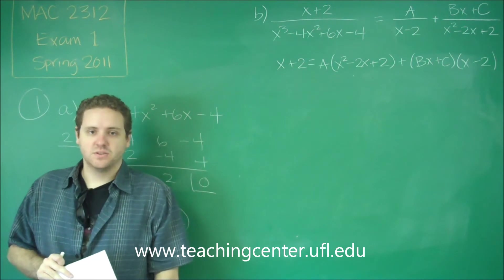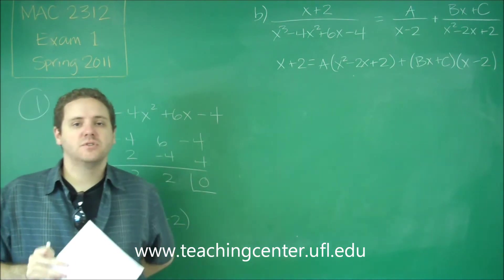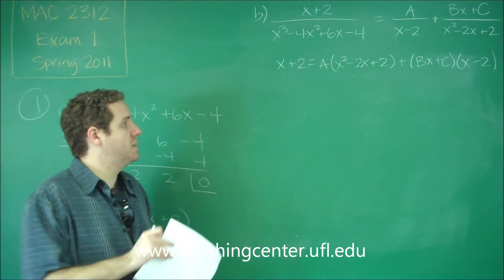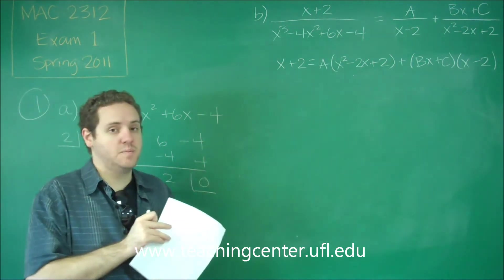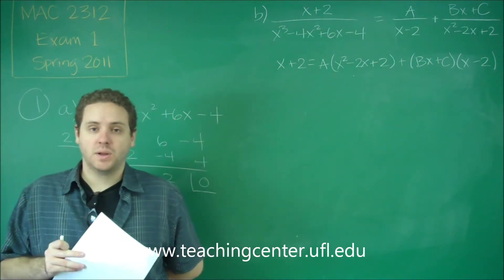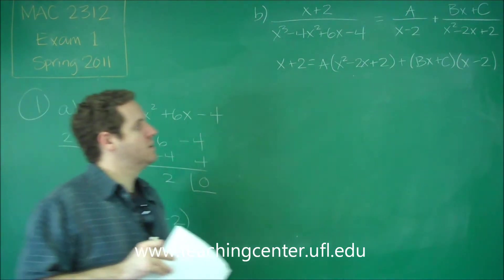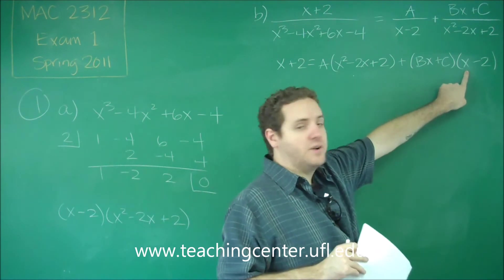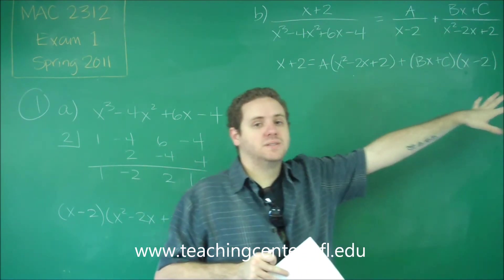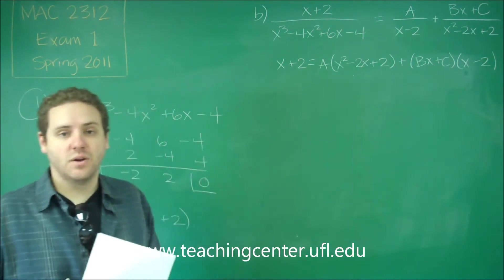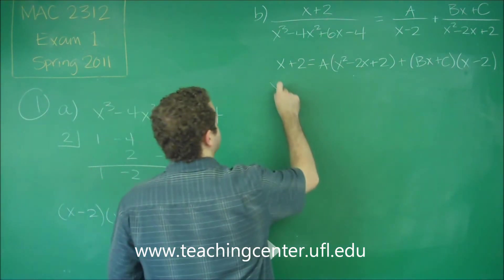So that all has to equal x plus 2. And now we need to solve for A, B, and C. So there's a couple of different ways to do this. And the first thing you should always try in a situation like this is if it's possible to make some of those constants A, B, and C zero by plugging in a particular value of x. That's always the best way to start. So you can see here, if you plug in 2 for x, this whole term would be zero. The only variable you would have left is A, and you could certainly solve for that. So let's plug in x equals 2.